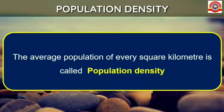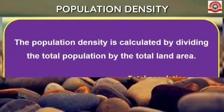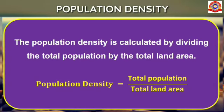The average population of every square kilometer is called population density. Population density is calculated by dividing the total population by the total land area. Therefore, population density equals total population divided by total land area.